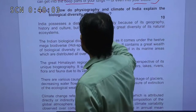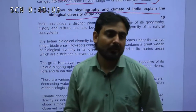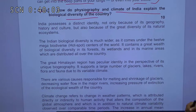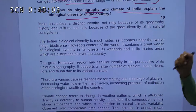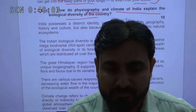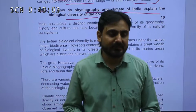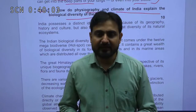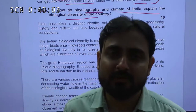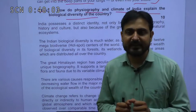The next question is: how do physiography and climate of India explain the biological diversity of the country? You need to explain how physiography and climate are connected with India's huge biodiversity. If you notice the Himalayan region, Western Ghats, Eastern Ghats, northeastern region, coastal region, island region — a lot of biodiversity is found there. This biodiversity is not only due to physiographic factors but also because of the different climatic zones that exist in India.